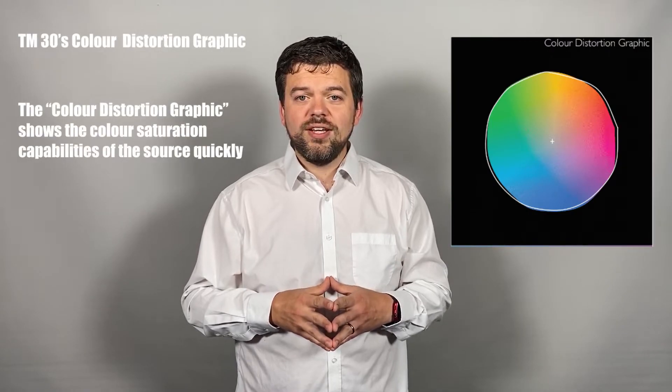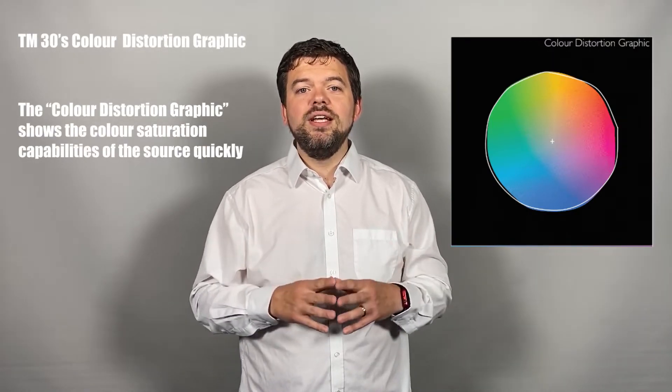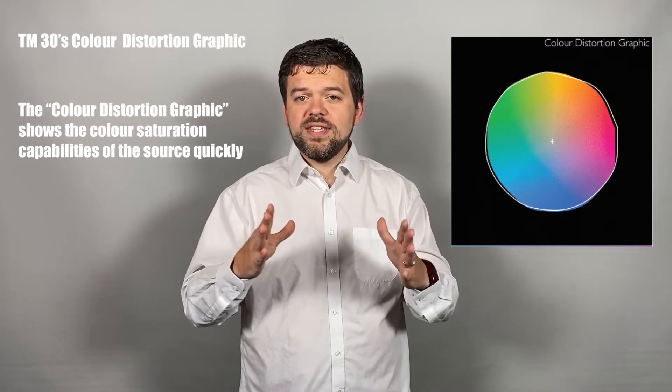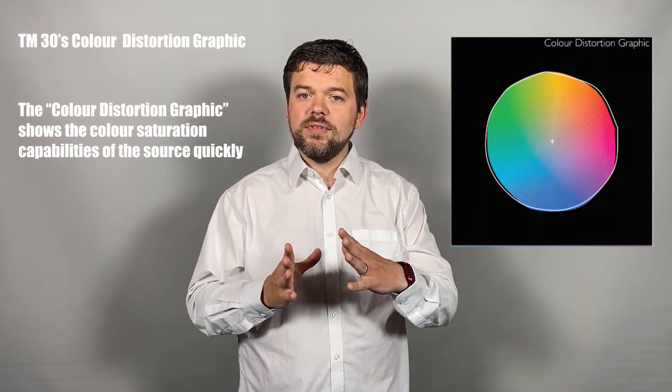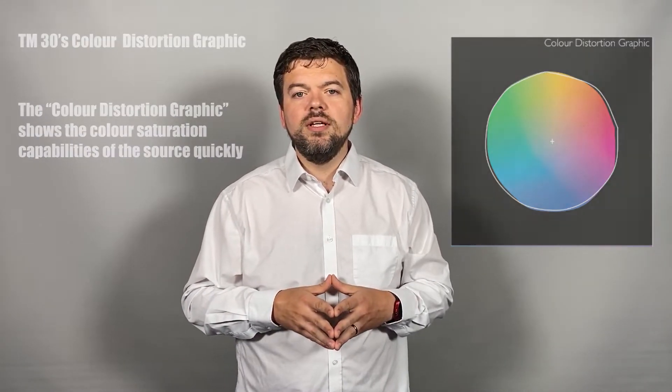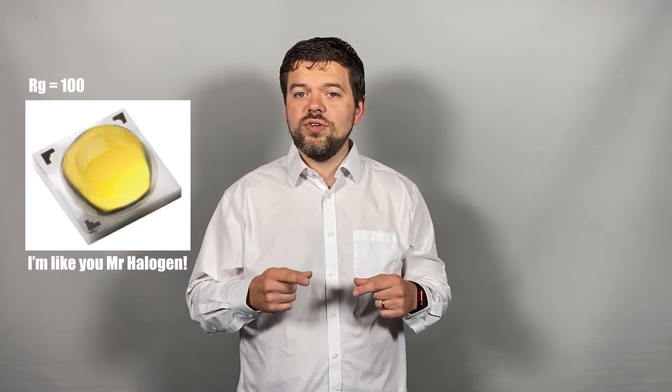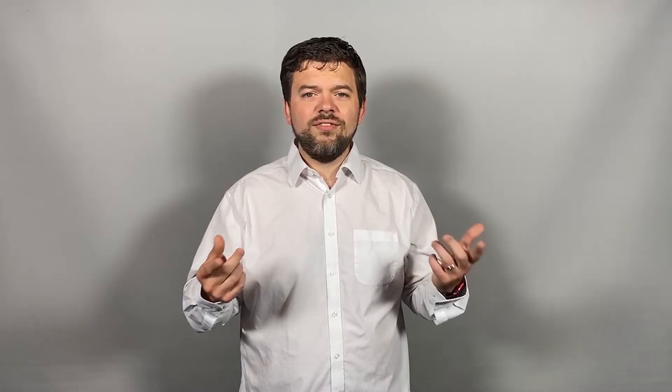Another view is the colour distortion graphic, which uses a black background and the CAM colour space shaped to show where the saturation capabilities are — I like this one as a quick reference. Remember that a score of 100 only means the test source does a perfect job of saturating colours like a halogen. For many applications this is wonderful, but there are some areas where saturation of particular colours might be preferable.